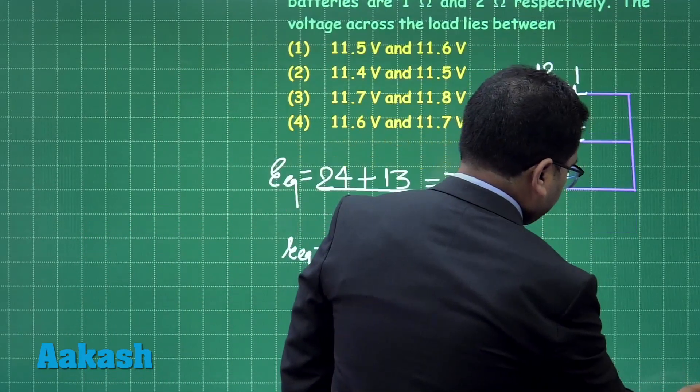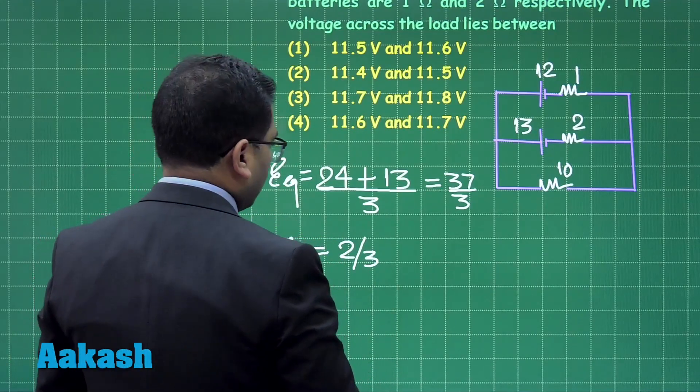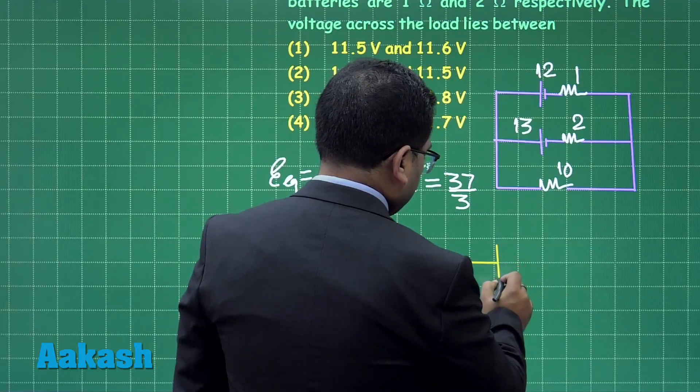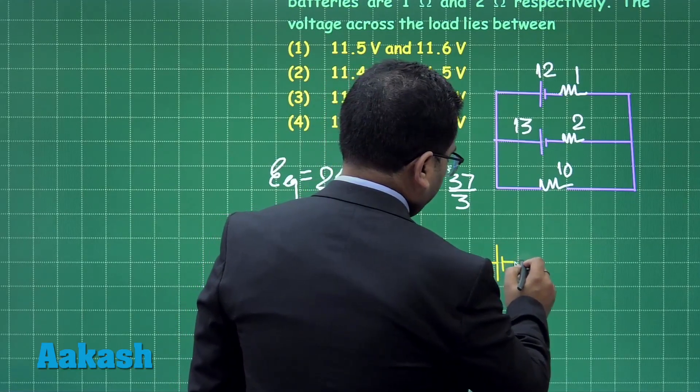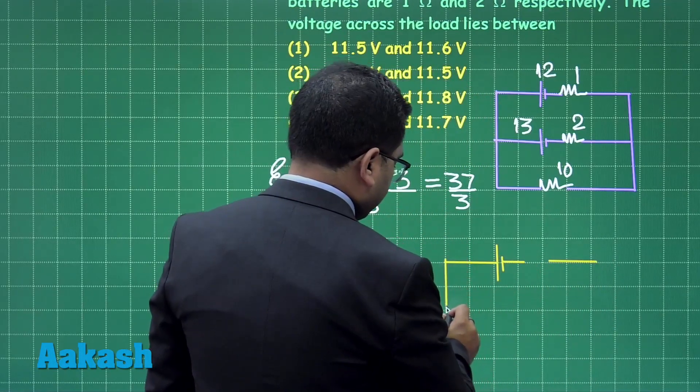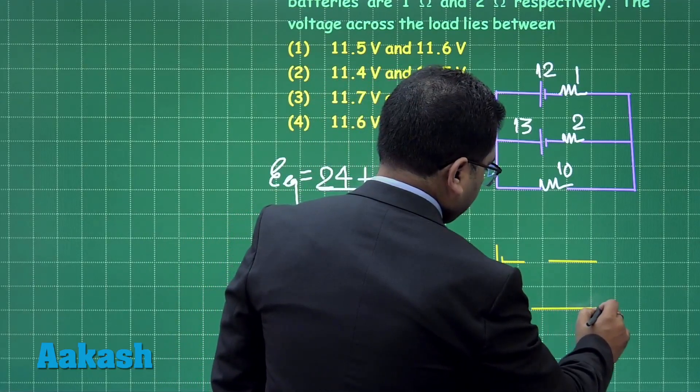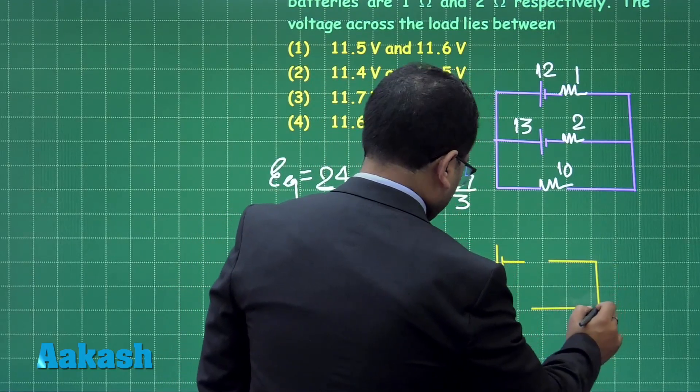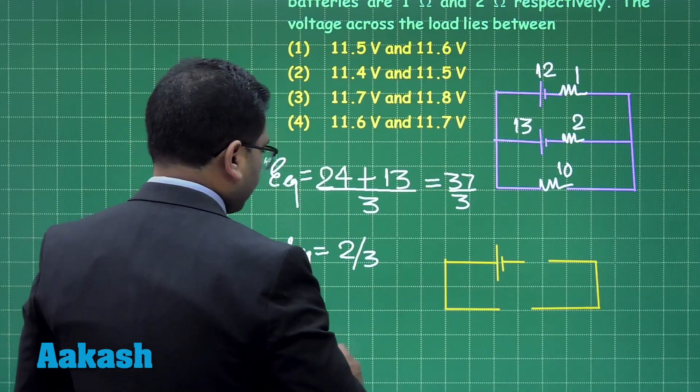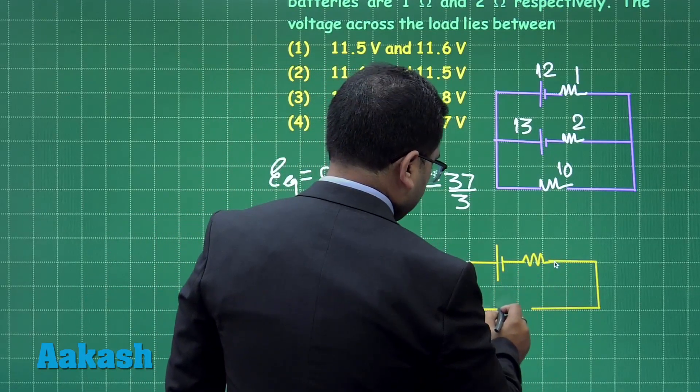Alright, now since we have calculated this thing, let's try to plot it and let's try to make a figure out of that. So here is the battery and this is the space for the internal resistance I have kept, and there, here is the situation.